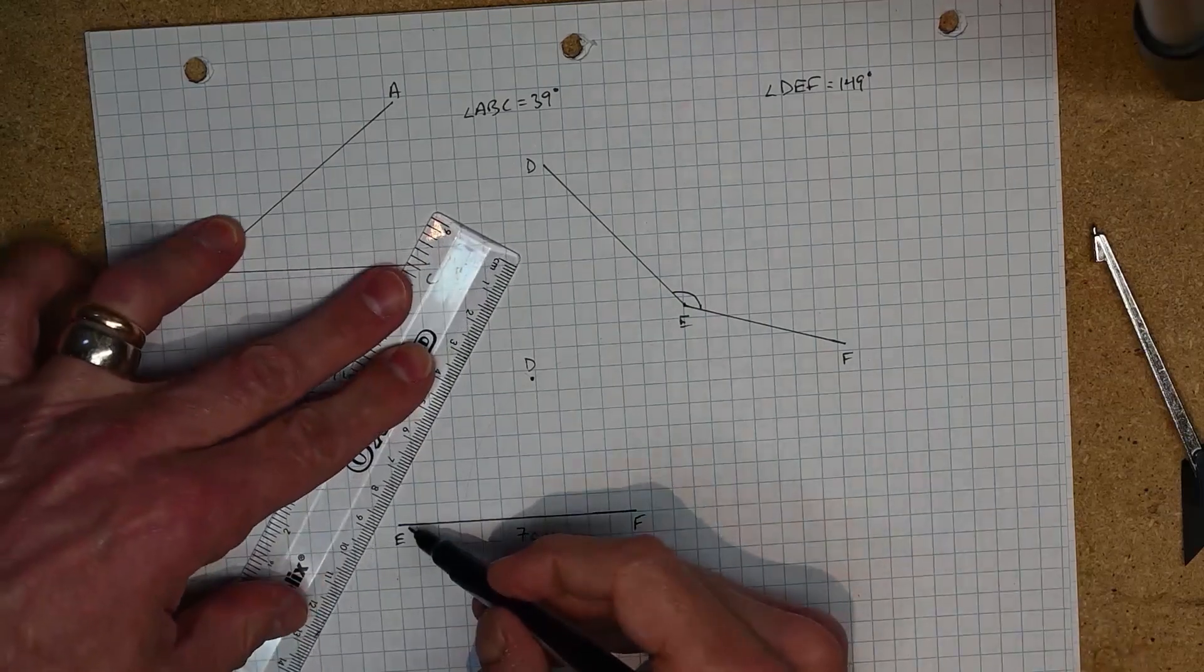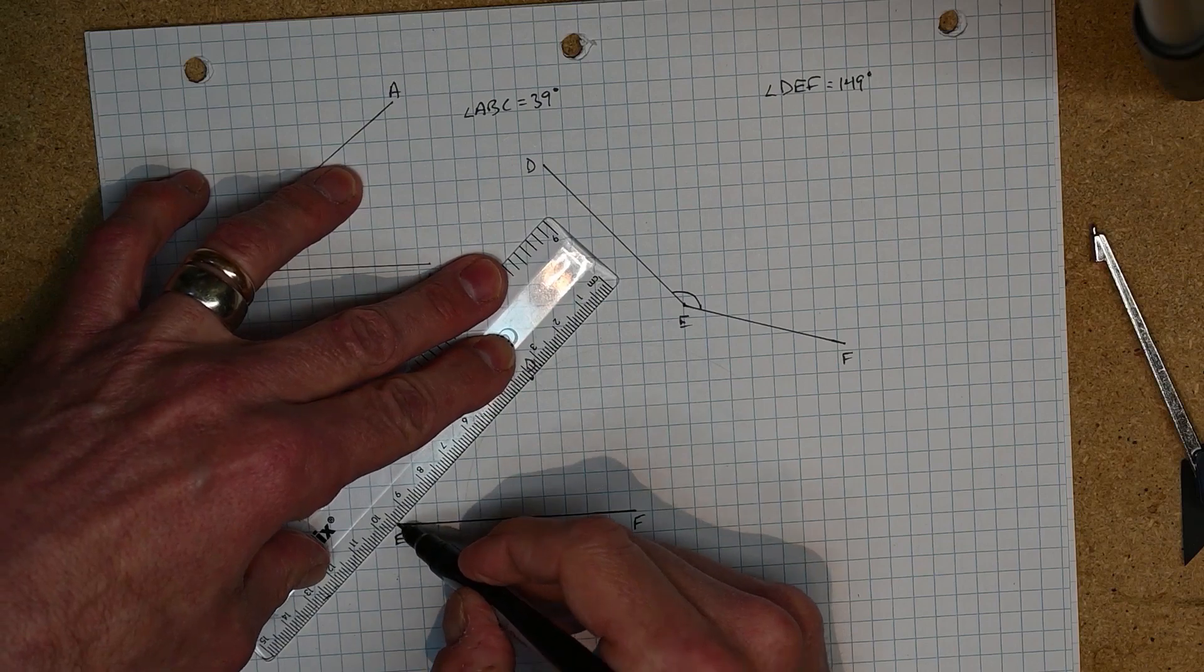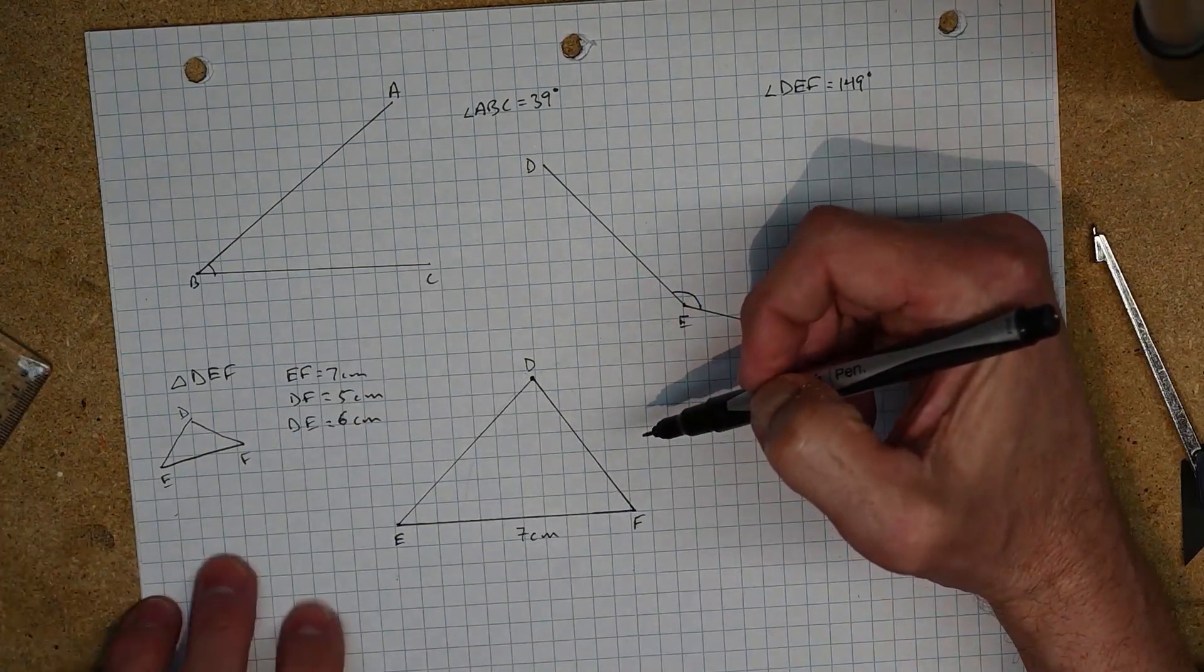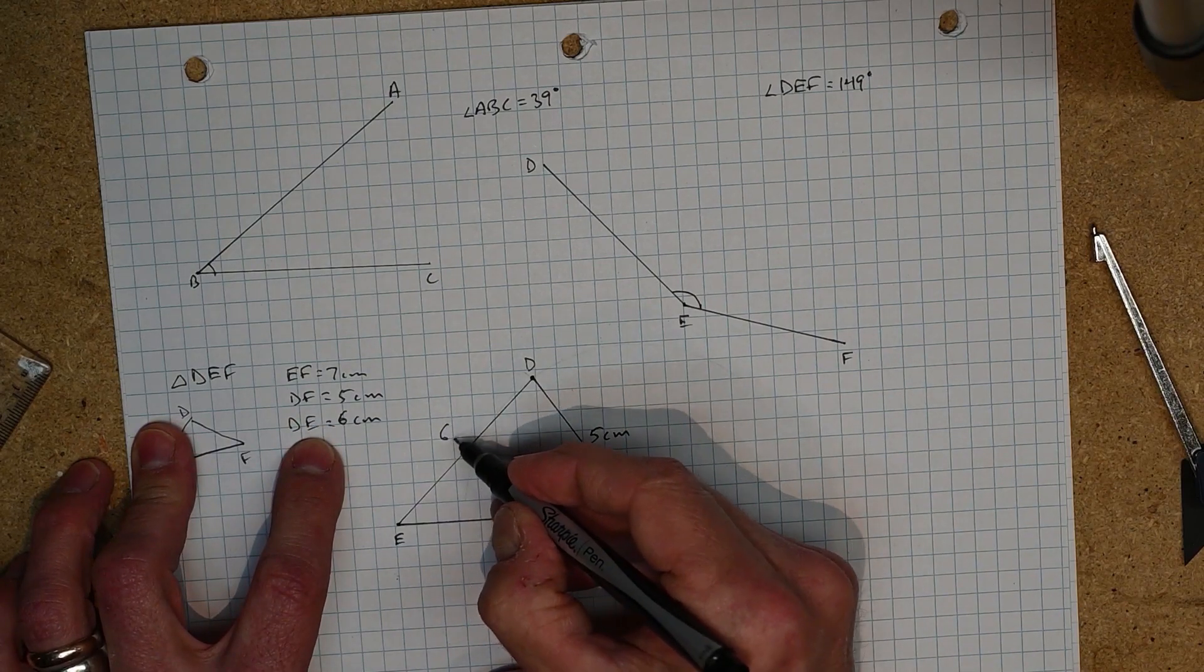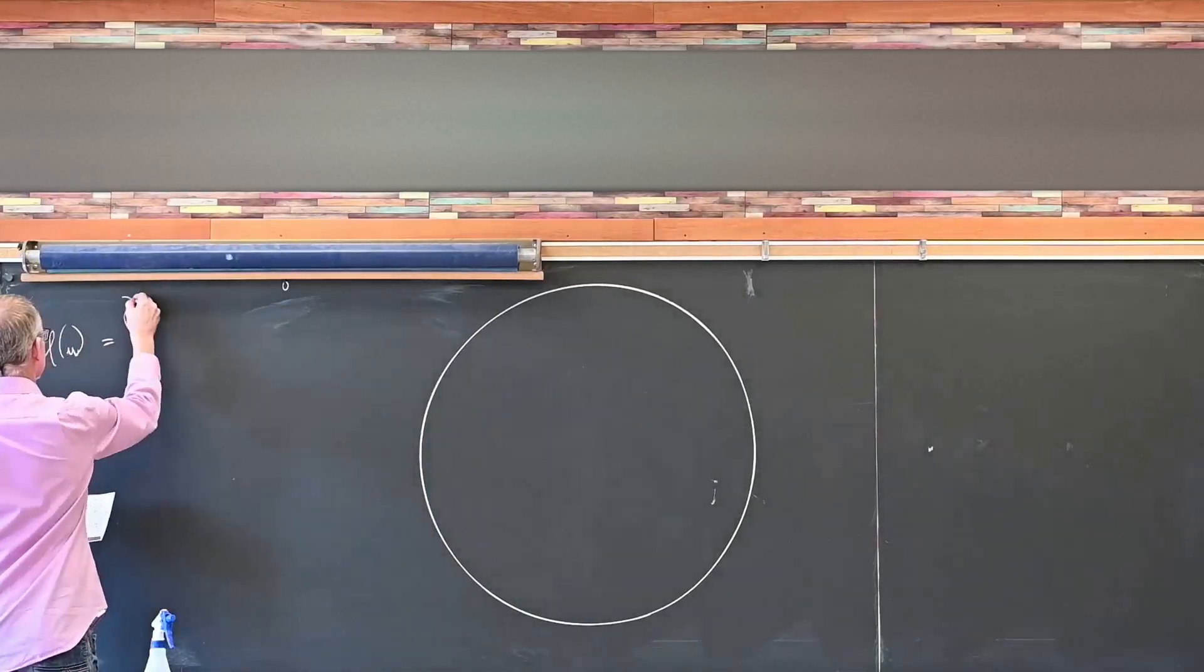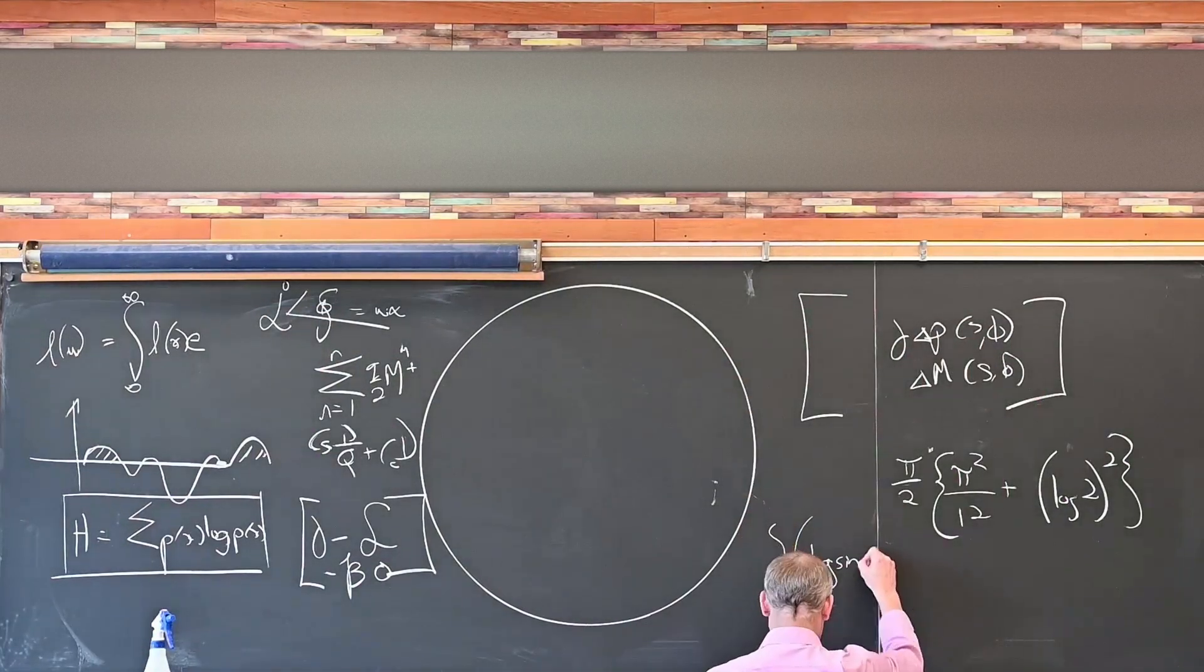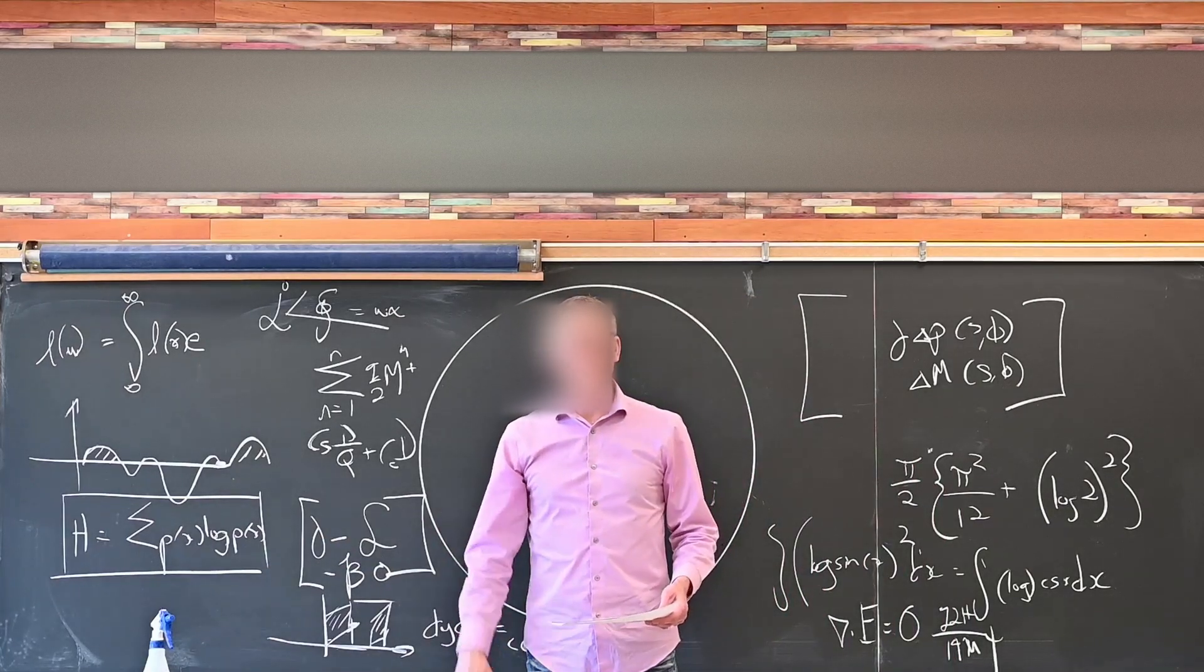And now I just have to join these together and I've got my triangle. So there's side ED here, side DF, and then of course I need to mark on there what I know. So DF is the side that's five centimeters, and DE is six centimeters. And that's a complete construction. You can see it's just that easy.